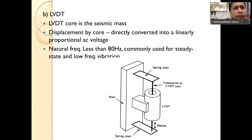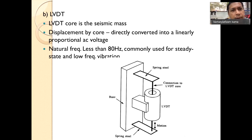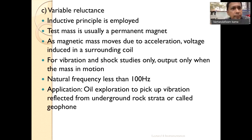Next is the LVDT type, which you have seen from the previous inductive sensor topic. The core is directly connected to the mass of the accelerometer sensor and converts displacement into a proportional voltage. When the mass moves, you get an output from the secondary coil of the LVDT. The difference between all these types is simply the position of the mass connected to the sensing element.